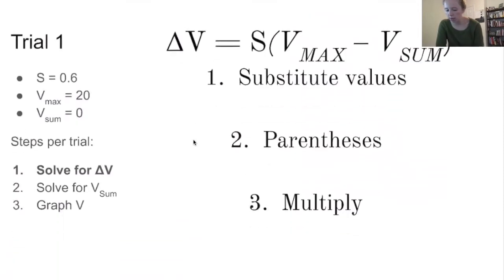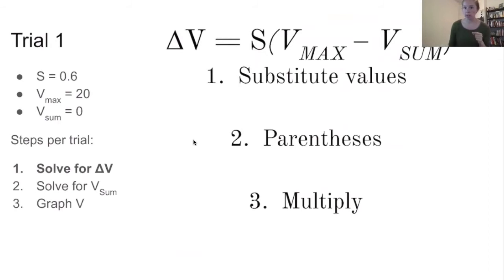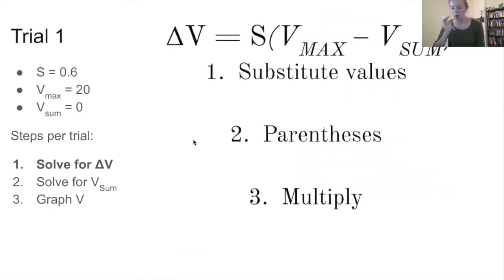So next, I'm going to walk you through two trials of a Rescorla-Wagner equation. I have over here under trial one the values of each of the variables that we're looking at. So we have S equals 0.6, so remember that's a value between 0 and 1. V max is 20, so that's equal to the magnitude of the unconditioned response. And then V sum is 0. So if we were to get complex with this, V sum would actually include the associative strength across all conditioned stimuli. But we're just doing a single neutral stimulus that is becoming a conditioned stimulus. So your V sum in that first trial is always going to be 0 when you're only working with one conditioned stimulus.